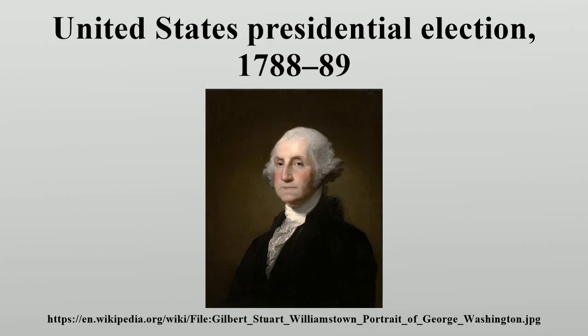No political parties existed at the time of the 1788-89 presidential election. Candidates were either Federalists, meaning they supported the ratification of the Constitution, or Anti-Federalists, meaning they opposed ratification. These groups were not established political parties, however, and were united in supporting Washington for president.